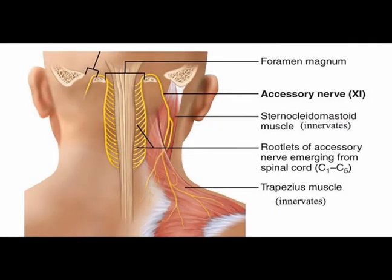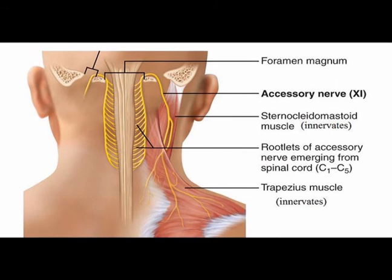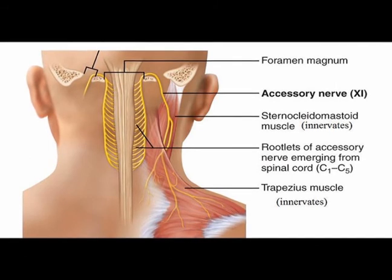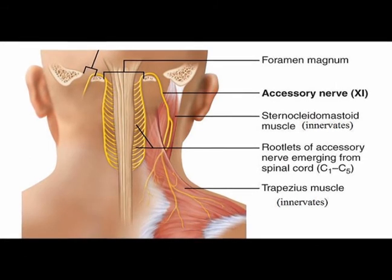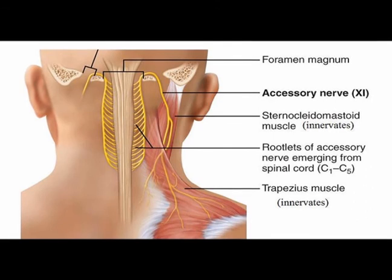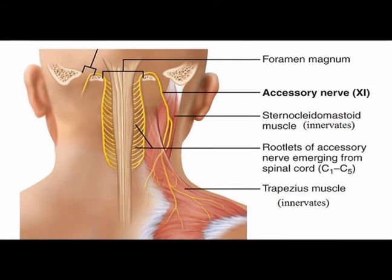The trapezius muscle is innervated by the spinal accessory nerve, which is cranial nerve number 11, and the ventral rami of C2 through C4.